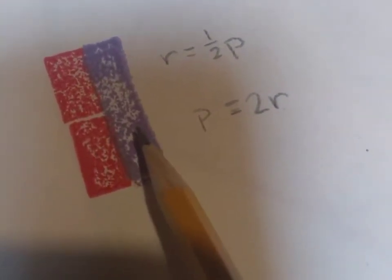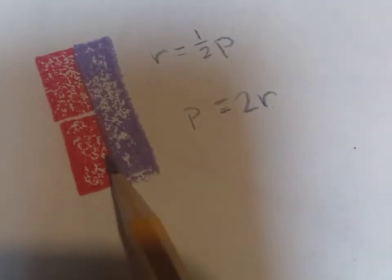R is half of P because P is twice as big as R, and we went through and did that with all the halves with our rods over there, and then we put them in the notebook.